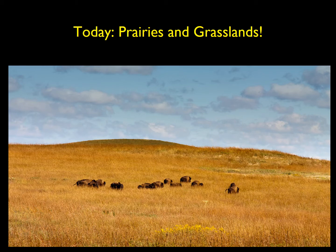So prairies and grasslands — a little different ecosystem from where we live here. But historically, very important areas. These are places that have been put under the plow for a lot of agricultural work. And historically, they were home to a lot of biodiversity. These ecosystems occur all over the planet on every continent, from the cerrado of South America, to the savanna of Africa, to the steppes of Asia. Prairies and grasslands are ubiquitous around the world.